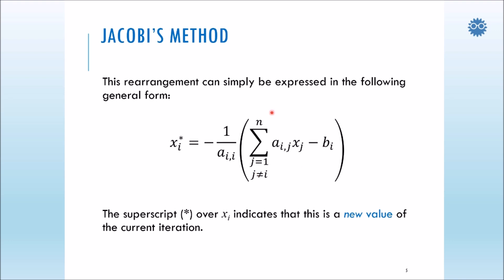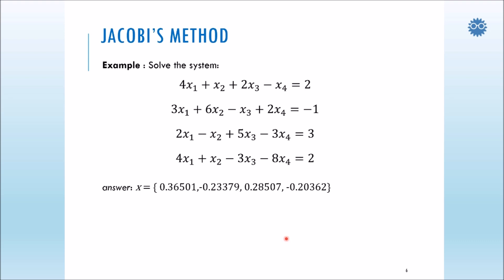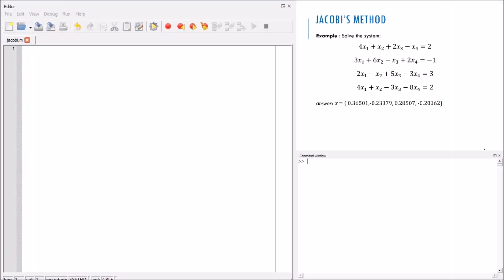We will use this algorithm to create the rearranged system. We should notice that x superscripted as star is a new value — it's the new value at each iteration. Now, in order to create the code, let's start with an example. We have this system and will create code that solves it, and in order to verify the solution is correct, we have a previously obtained answer. Let's go to the IDE, to the editor, and start coding.